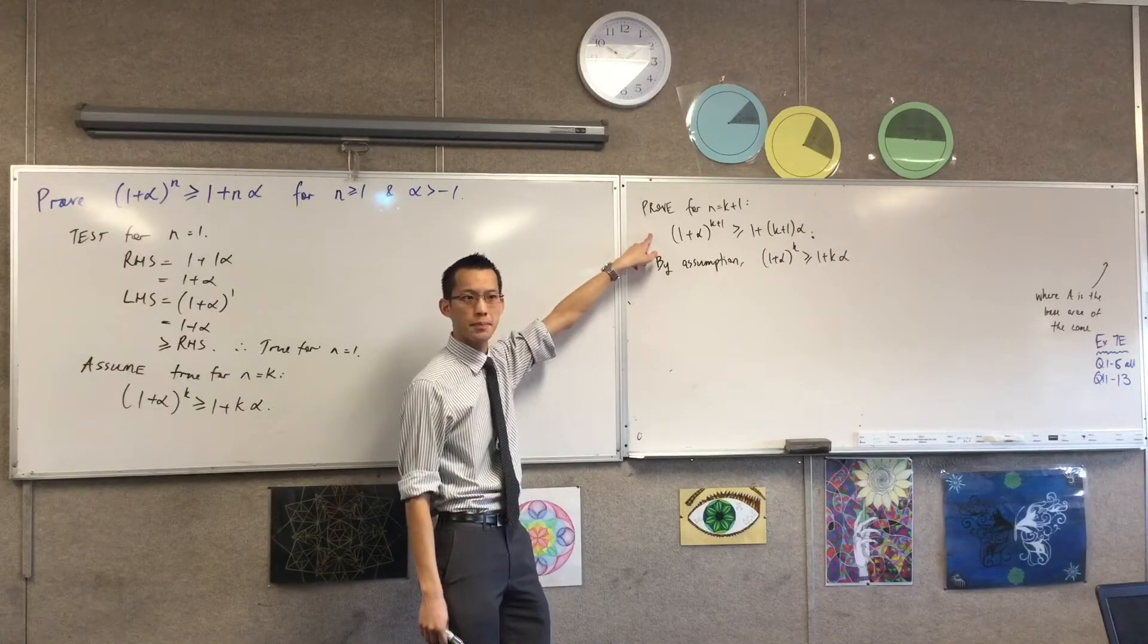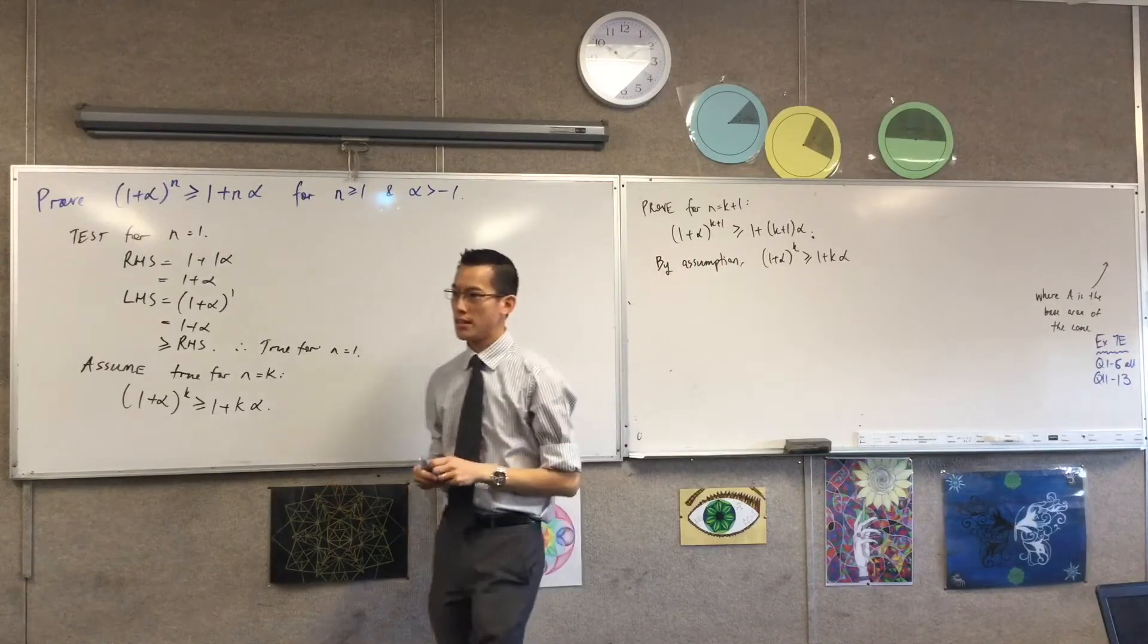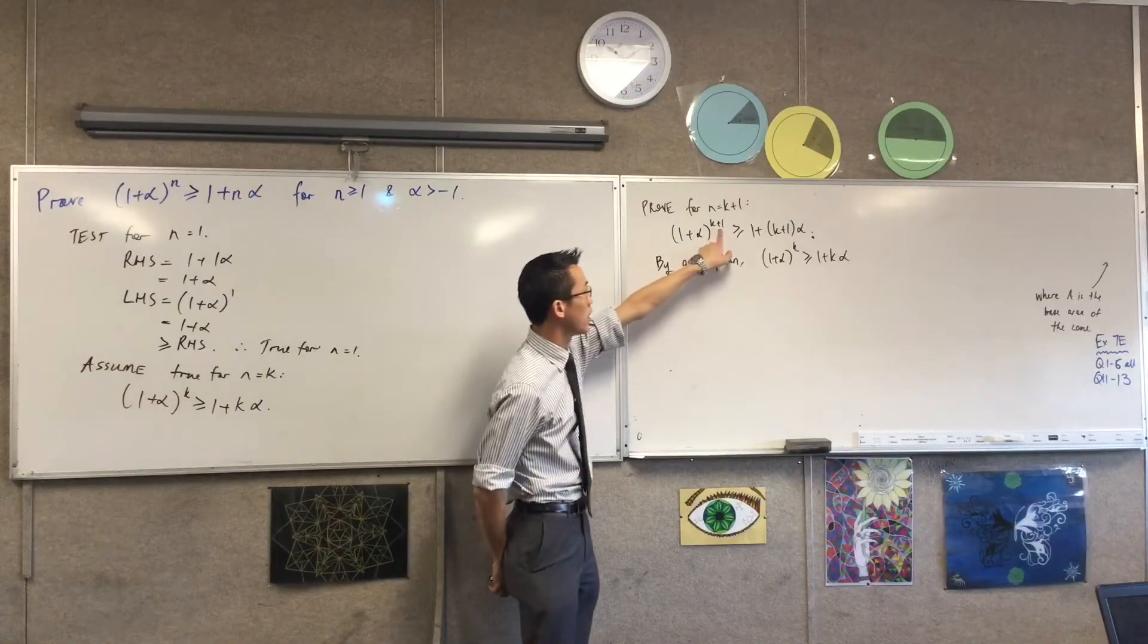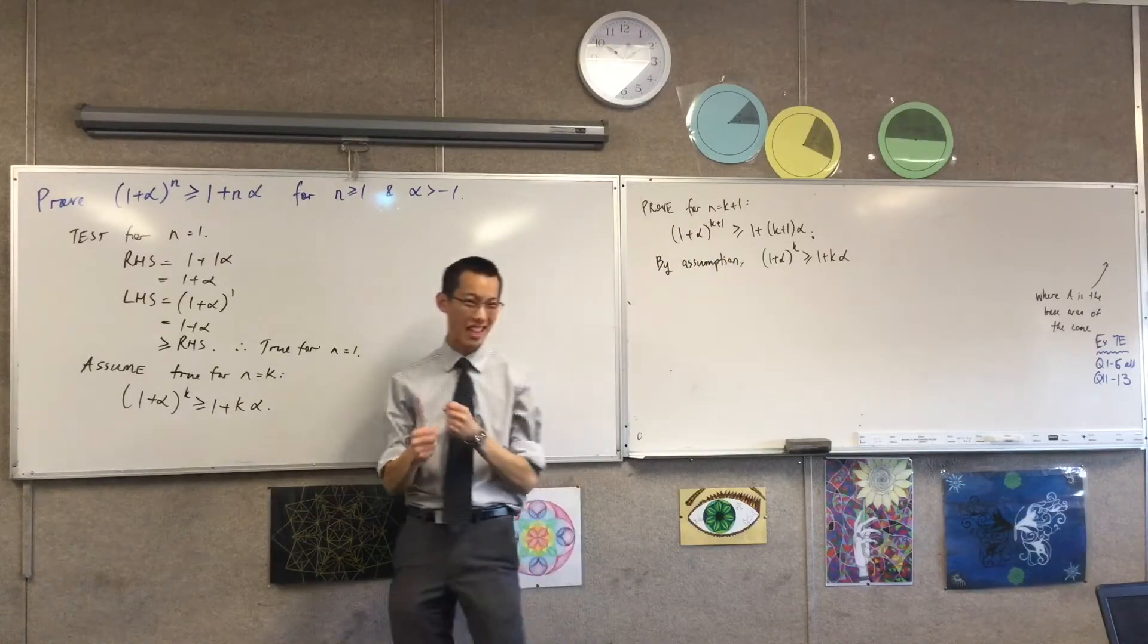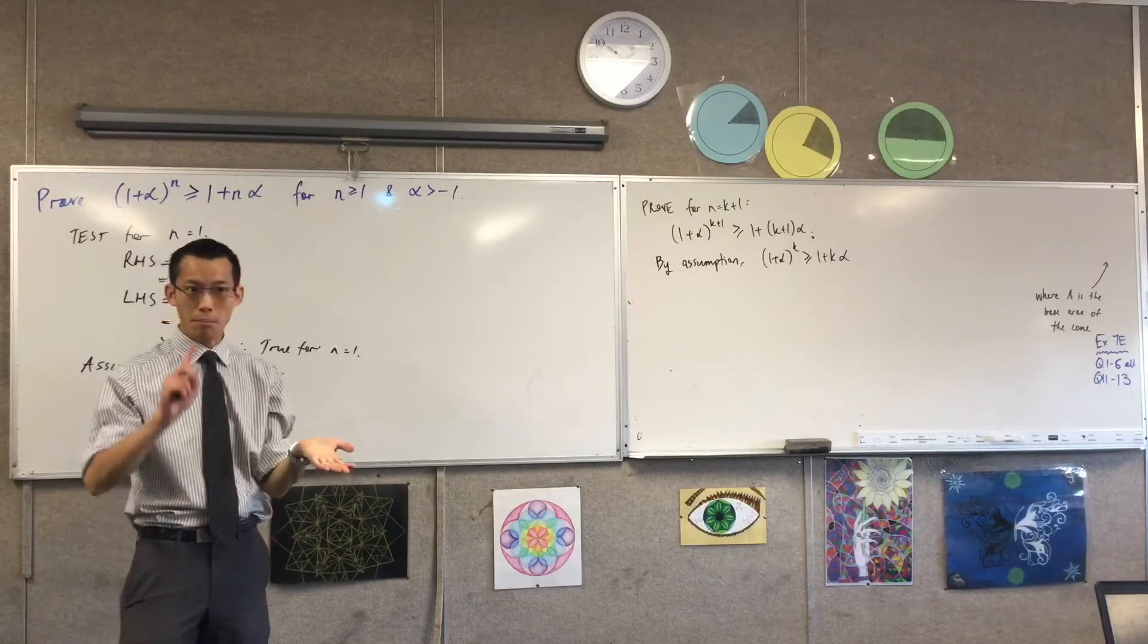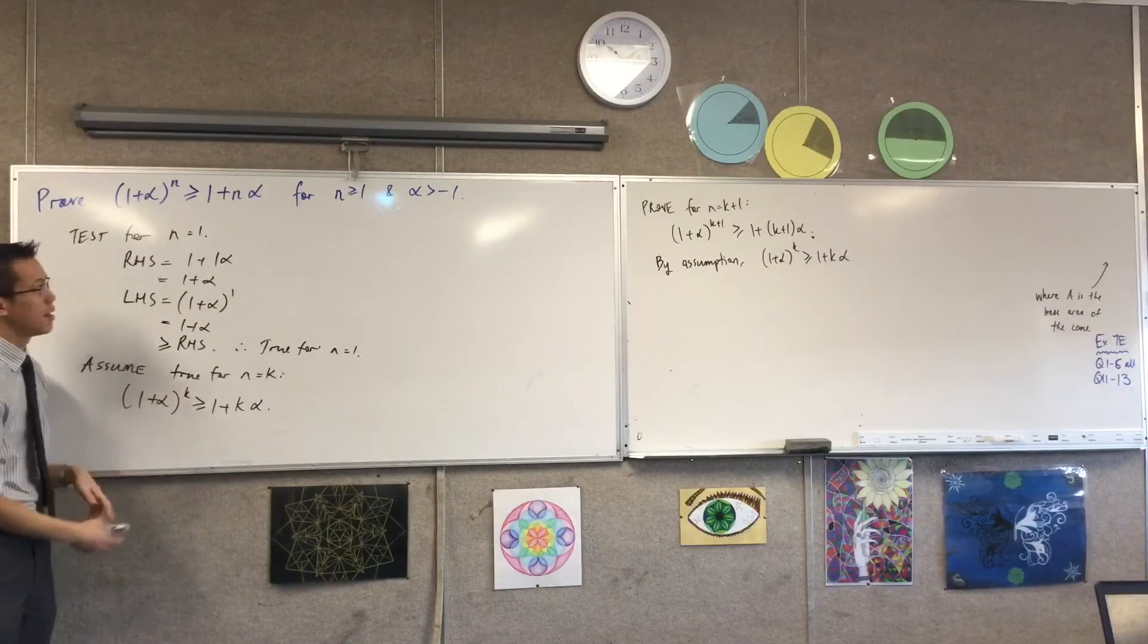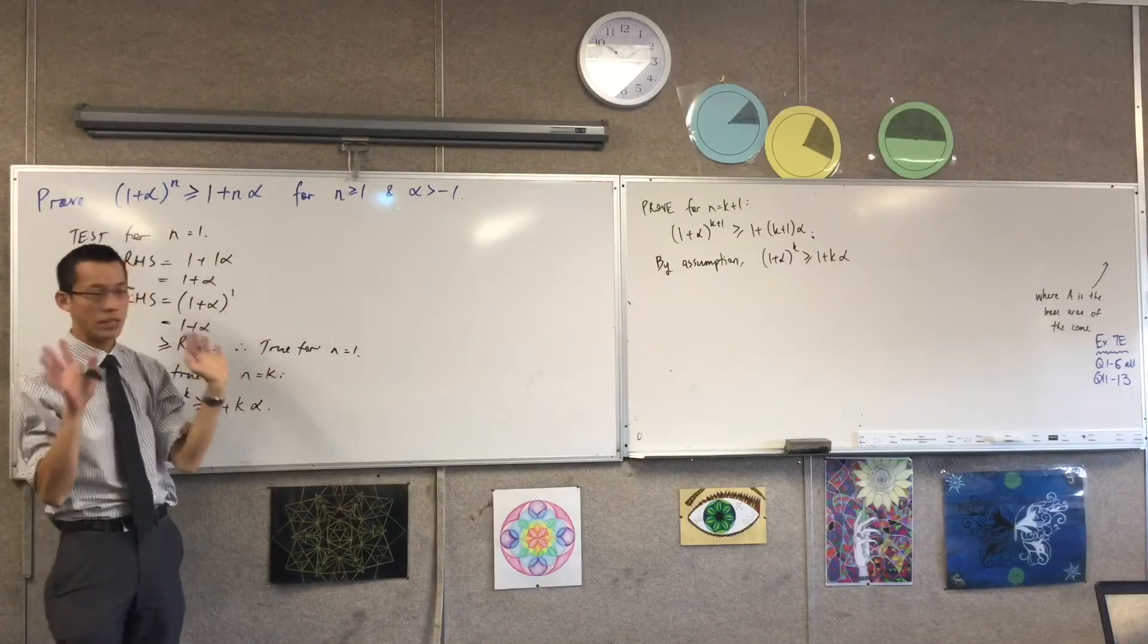So I'm going to begin there. So by assumption, I'm just going to state that. And then I think to myself, what must be done to this statement to try and get it close to this statement? What is the difference between these two things? If I just have a look at both left-hand sides, see how there's an extra 1 plus alpha being multiplied on the left-hand side? Like that k plus 1, that 1 really means 1 plus alpha times that whole thing. So what I'd like to do is multiply both sides by 1 plus alpha.